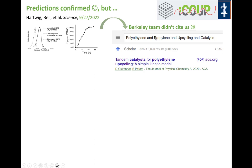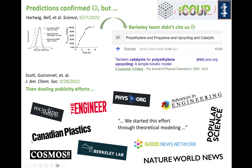We were very excited about that, but the Berkeley team did not cite us. If you put their significance statement keywords into Google Scholar, our paper comes up as the first hit. Damien was working on this independently trying to do experiments to show this could be done, and their paper came out just one day later. There was a little rush to generate publicity, and press releases written by both teams also kind of forgot us.